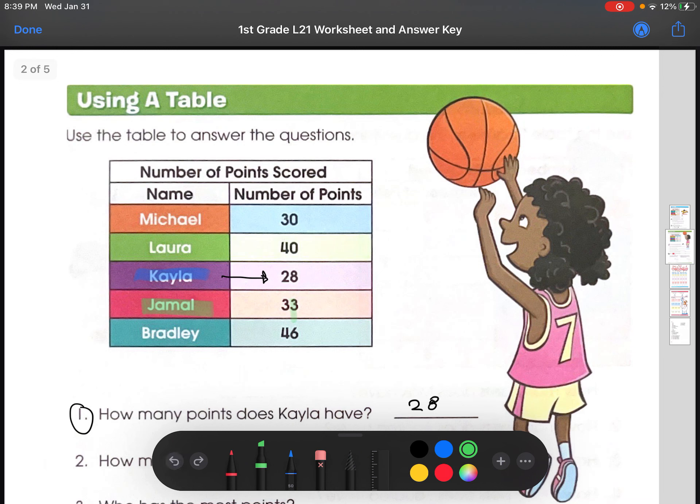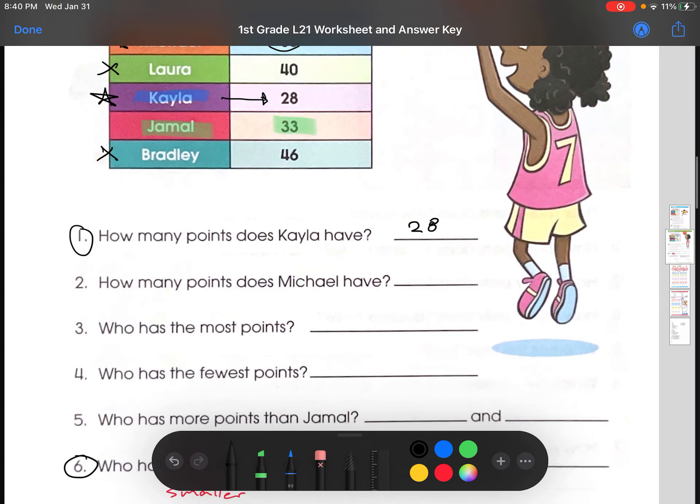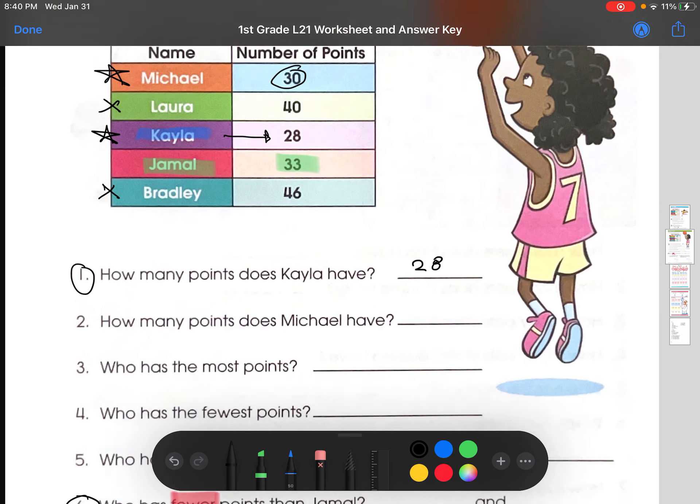So, now we're going to be looking at all the other numbers, all the other people, and see who has less. So, first, let's start with Michael. Michael has 30. 30 is smaller than 33. So, star him. Laura has 40. 40 is bigger than 33. So, she doesn't count. And Kayla has 28. 28 is smaller than 33. And Bradley has 46, which is bigger than 33. So, he's a no. So, the two are Michael and Kayla.